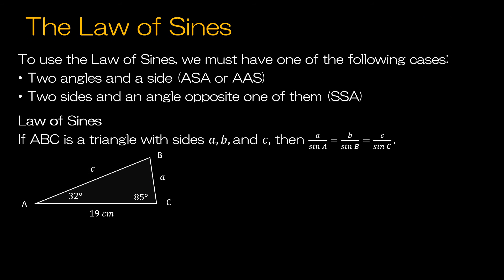The Law of Sines doesn't work for all oblique triangles. We have to have one of two conditions. We have to have two angles and a side — so either angle-side-angle or angle-angle-side — and we're talking about having them in that order as we move around the triangle. So for instance, our triangle ABC, we have an angle, then a side, then an angle. So this is the angle-side-angle option.